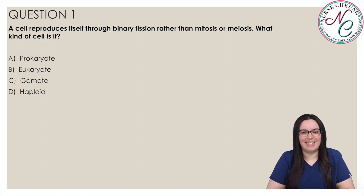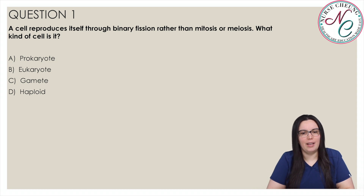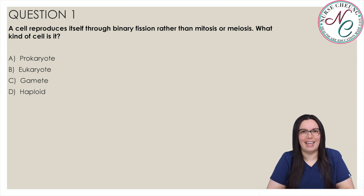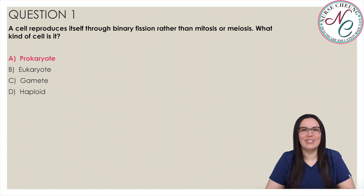Question 1. A cell reproduces itself through binary fission rather than mitosis or meiosis. What kind of cell is it? A, prokaryote; B, eukaryote; C, a gamete; or D, a haploid? The correct answer is A, prokaryote.